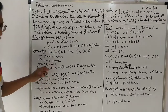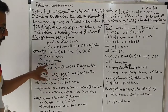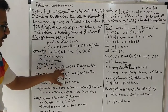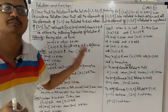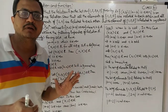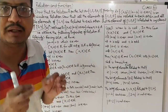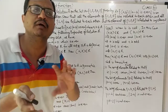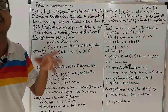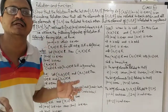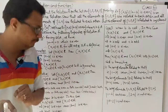Thus, (a, b) belongs to R implies (b, a) belongs to R. So R is symmetric। हम (a, b) belongs to R को लेकर चले और (b, a) belongs to R show कर दिया - तो इसका मतलब हमारा relation symmetric हो गया।